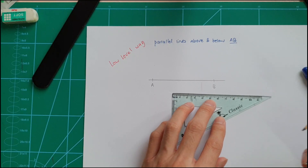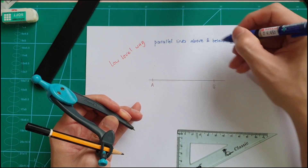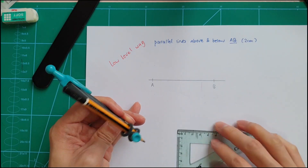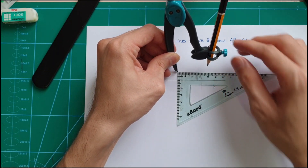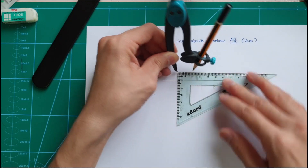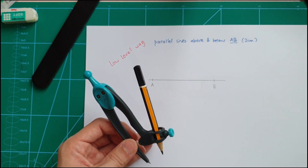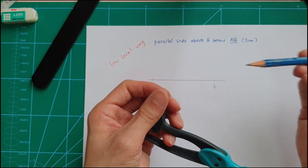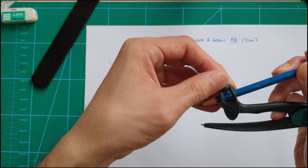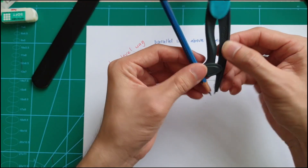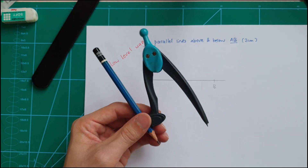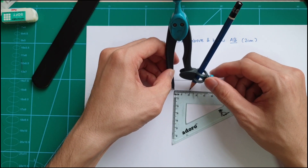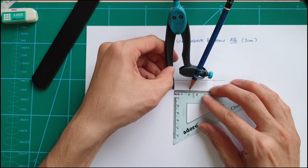So with my ruler I need to measure 2 cm. I'm going to put parallel lines above and below AB, which is 2 cm. So here is my zero and I open up to 2 cm. Make sure your pencil is sharp enough — I'm going to change to a sharper one. So I get my 2 cm ready.